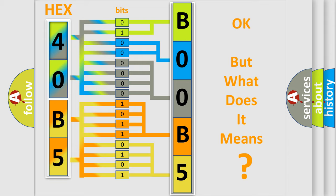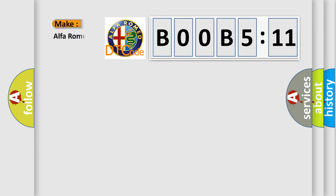The number itself does not make sense to us if we cannot assign information about what it actually expresses. So, what does the diagnostic trouble code B00B5:11 interpret specifically for Alfa Romeo?